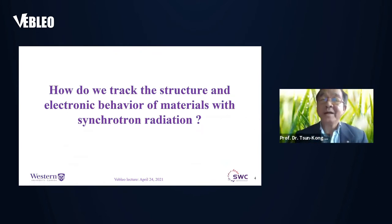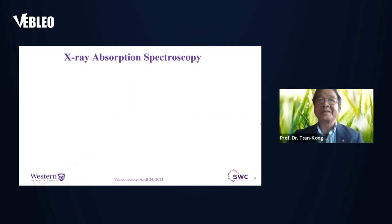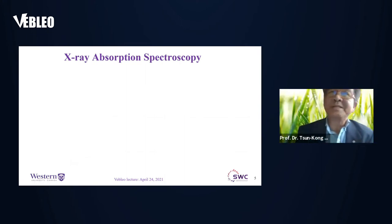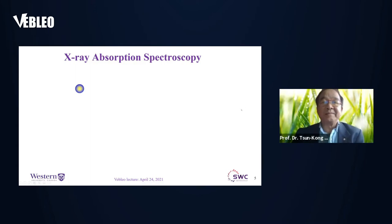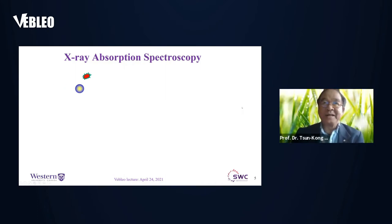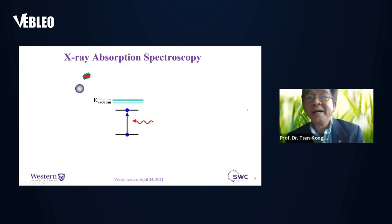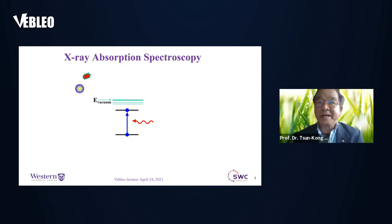So how do we try to understand the structure and electronic behavior of materials with synchrotron light? X-rays interact with matter either by scattering or absorption. Today I'm going to place the emphasis on X-ray absorption spectroscopy. Let's start with an atom: we shine X-rays on the atom, it absorbs X-rays and goes into an excited state. The absorption process is a quantum transition that excites the core electron into unoccupied electronic states.